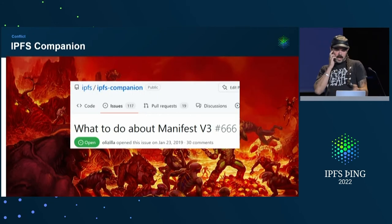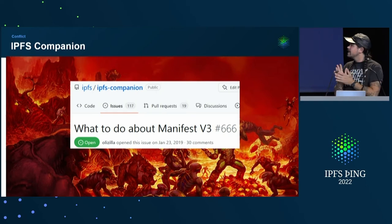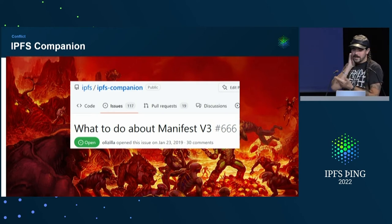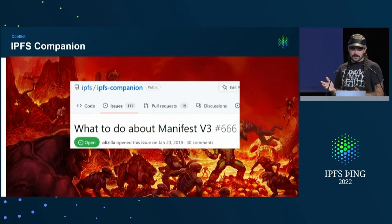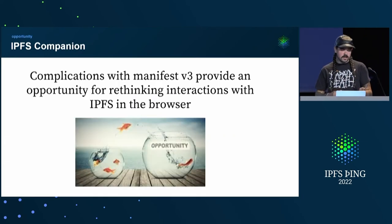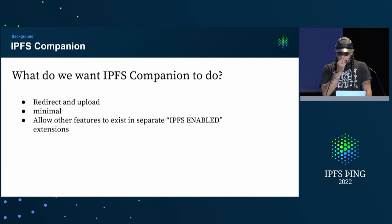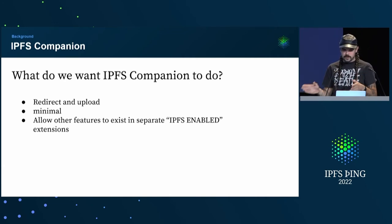There's a big issue that happens to be numbered 666 — this was made before we got to it — trying to deal with Manifest V3. It's got a lot going on; it's a pretty big thread that's been going on for years, back to 2019. I'm not going to get too deep into Manifest V3 specifics because it's just depressing. We don't have to think about it that way. I'm trying to think of this as an opportunity to rethink what we can do with Companion and how our users will interact with it in the browser. We're saying: what do we want IPFS Companion to do now, and how can we move some of these features around?